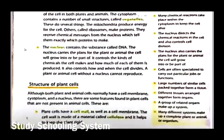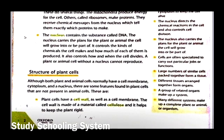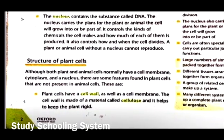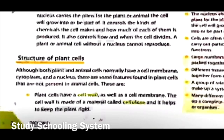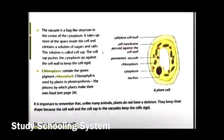Now we'll read about plant cells. 'Although both plant and animal cells normally have a cell membrane, cytoplasm, and a nucleus, there are some features found in plant cells that are not present in animal cells.' So there's a way to distinguish between an animal cell and a plant cell. 'Plant cells have a cell wall as well as a cell membrane. The cell wall is made up of a material called cellulose and it helps to keep the plant cell rigid.'